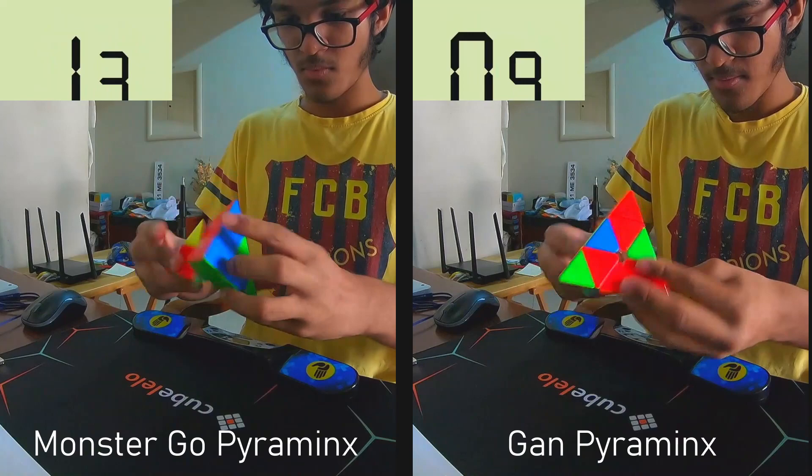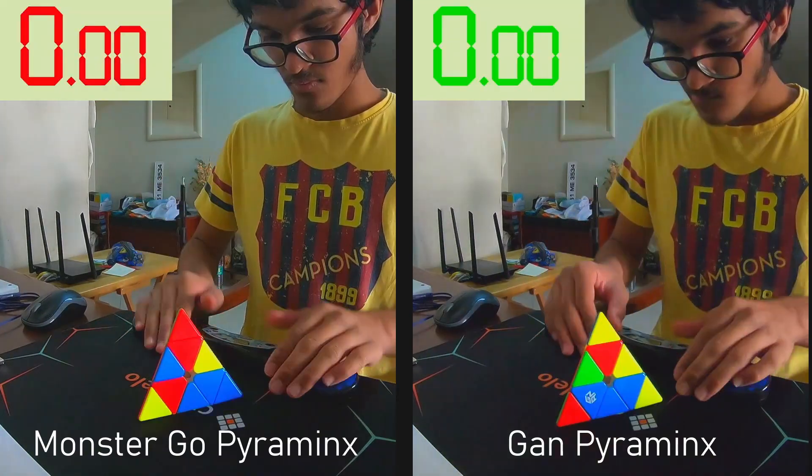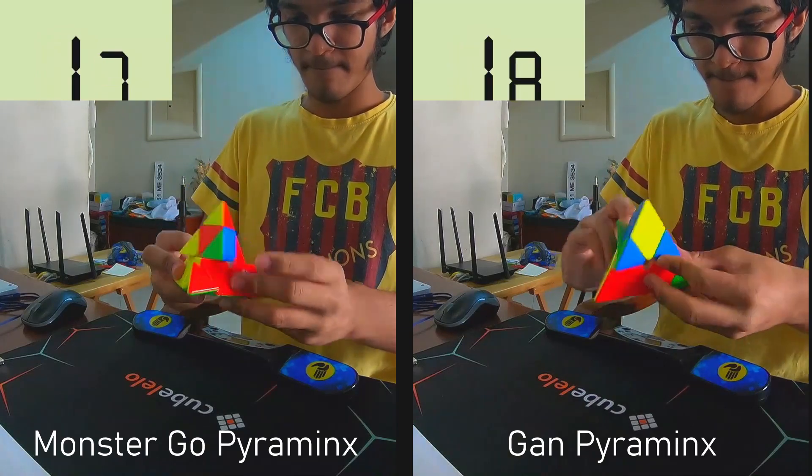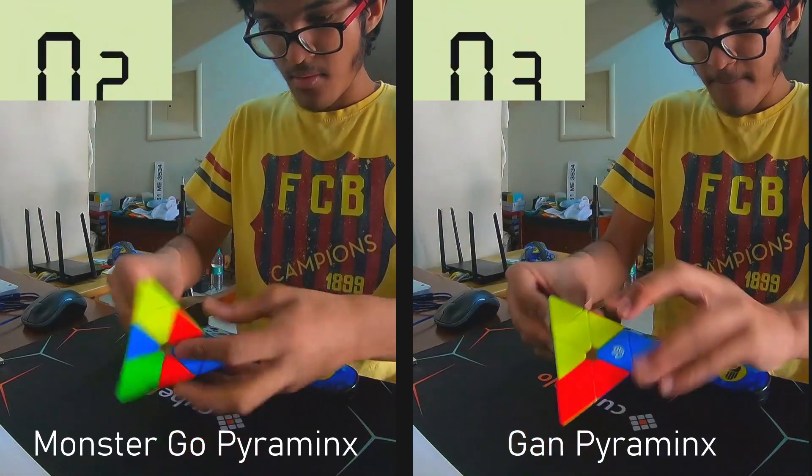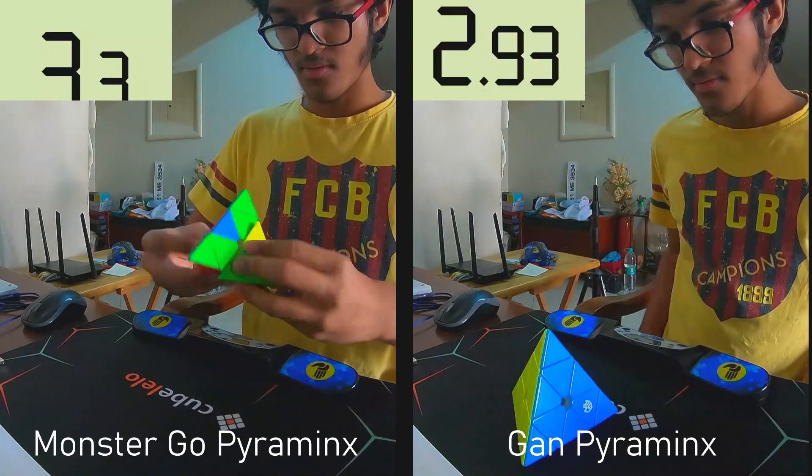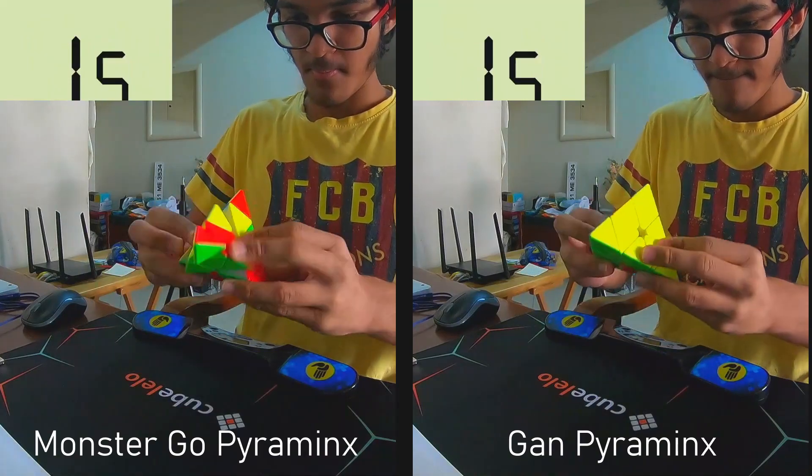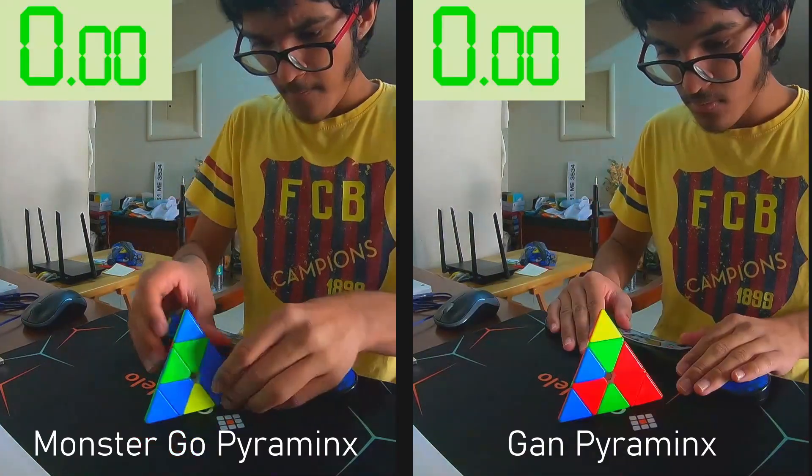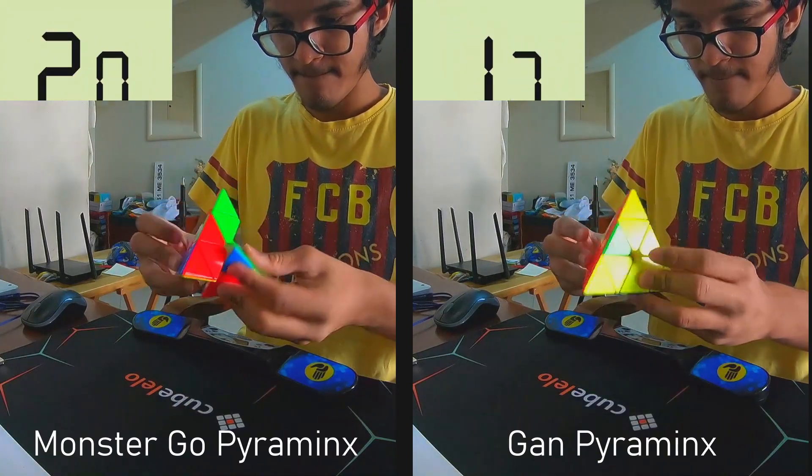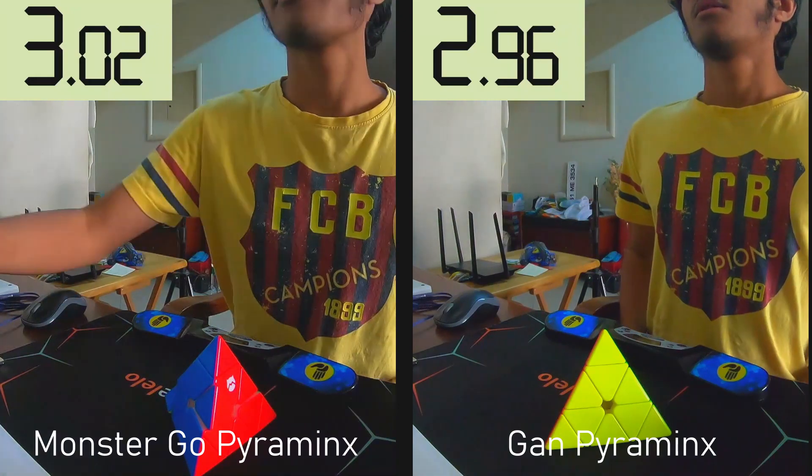As you can see from the solves, I generally perform better on the GAN Pyraminx. This is largely due to the ball bearing-like tips on the Monster Go Pyraminx, which inhibit my turns there and overall make for a locky experience. This can be seen further by how the cube deforms from time to time. This greatly diminishes my liking of the puzzle, as the tips are an important component of the puzzle itself. Overall, I prefer the GAN Pyraminx to this Monster Go Pyraminx, but it is nevertheless a good option, especially if you are on a budget.